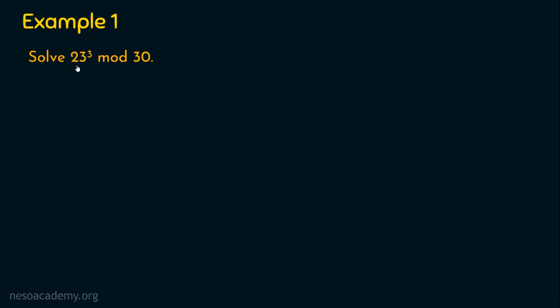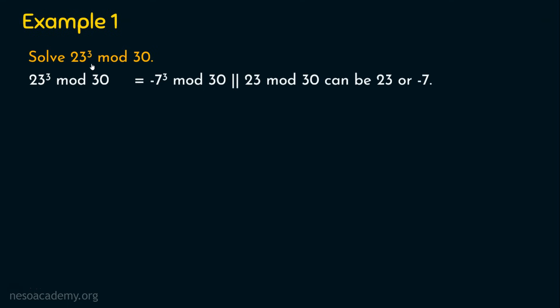It's easy to do this — you can take a calculator, perform 23 power 3, get the result, then divide by 30, and whatever remainder you get is the answer. But I want everyone to try without calculators. That's the main agenda of modular exponentiation: even big calculations can be easily performed using it. I strongly recommend you not to use calculators for these kinds of modular exponentiation problems.